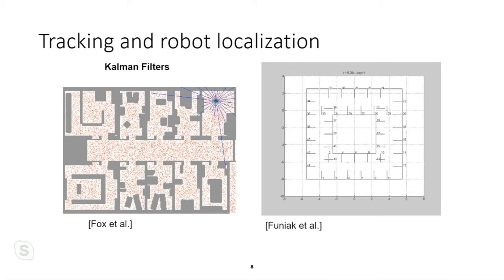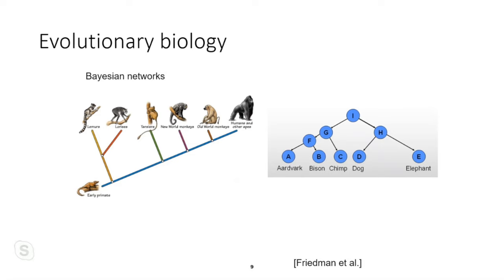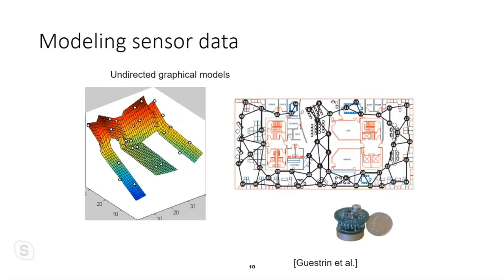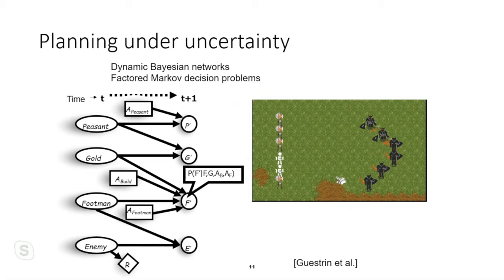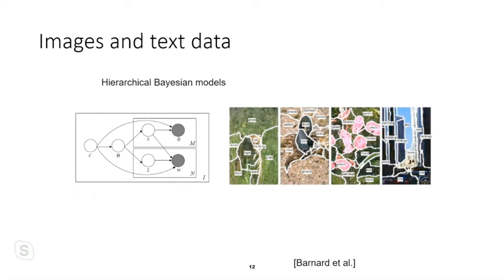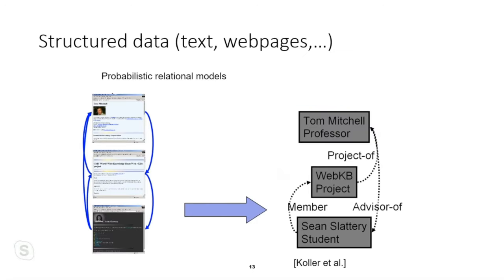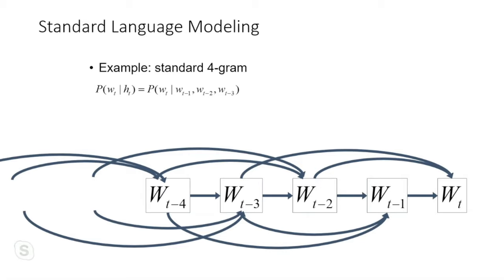Other applications include evolutionary biology via Markov networks, modeling sensor data, decision-making under uncertainty using dynamic Bayesian networks and factor Markov decision processes, and image processing. These examples are often covered in courses at CMU. There's also structured data analysis covering text and web pages.